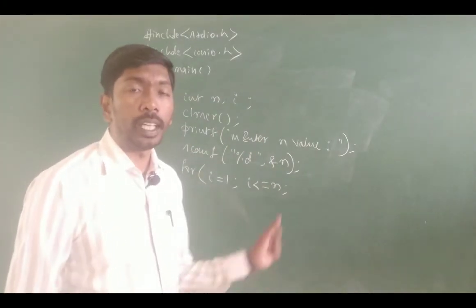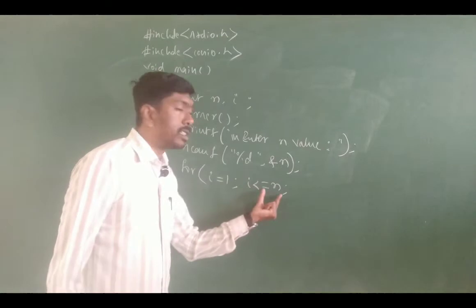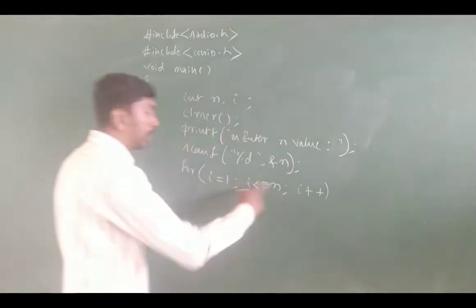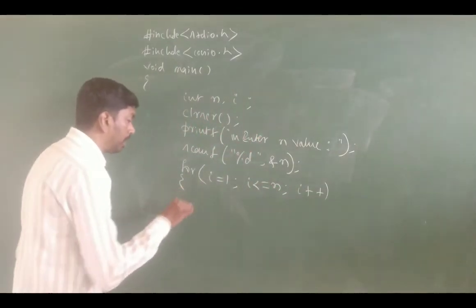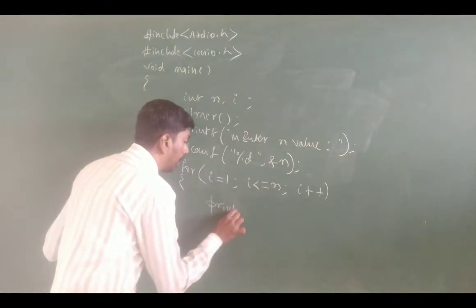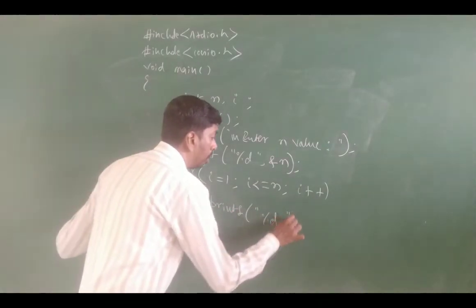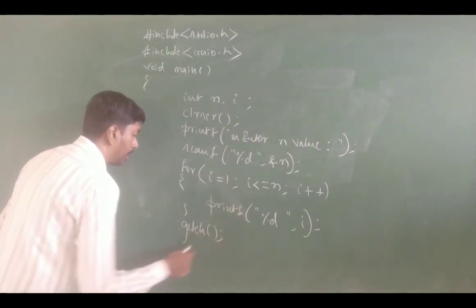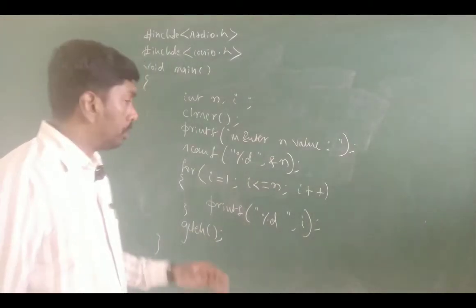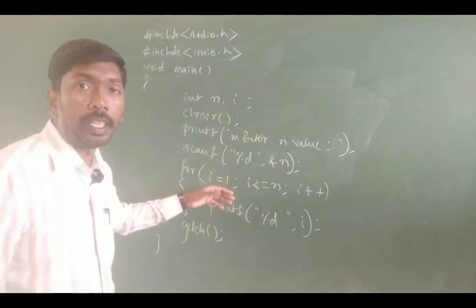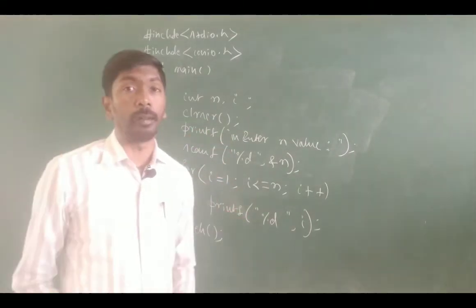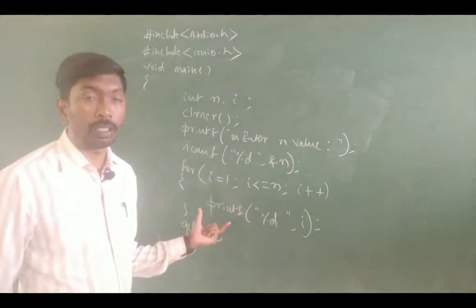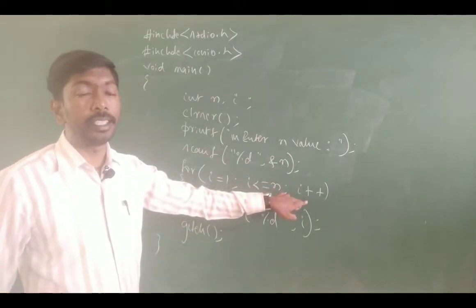That is the condition: while i is less than or equal to n. Inside the block we write printf %d, i to display the i value. Then close the for loop and add getch. Close the main function.